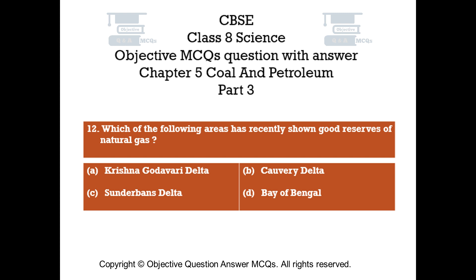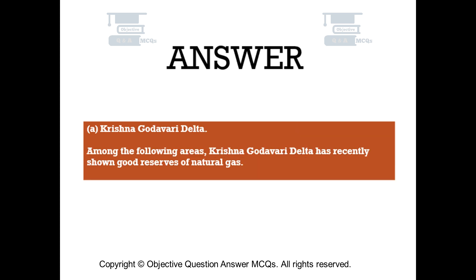Question number 12. Which of the following areas has recently shown good reserves of natural gas? Option A: Krishna Godavari Delta. Option B: Kaveri Delta. Option C: Sundarbans Delta. Option D: Bay of Bengal. The right answer is Option A, Krishna Godavari Delta. Among the following areas, Krishna Godavari Delta has recently shown good reserves of natural gas.